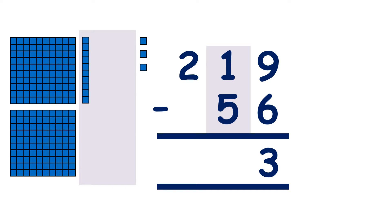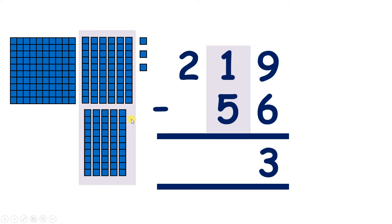Now we can move on to our tens. We only have 1 ten, but we need to subtract 5, so what do we need to do? Well, we know that 100 is the same as 10 tens, so we can exchange 100 for 10 more tens, or regroup 100 as 10 tens. So now we don't have 2 hundreds — we have 1 hundred — and we don't have 1 ten, we now have 11 tens. It's important to understand we have 1 less hundred, and 1 less than 2 is 1, so that's why we've got the 1 written there. We have 10 more tens, so we can always write a 1 in front of our tens digit.